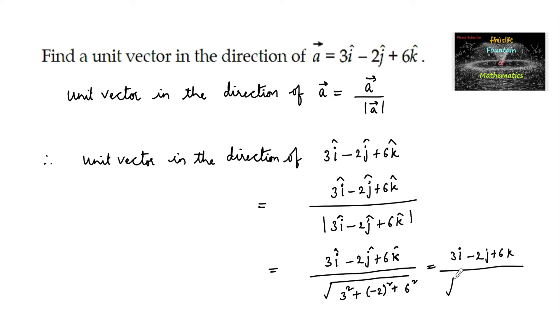which is equal to 3i minus 2j plus 6k upon root over 9 plus 4 plus 36